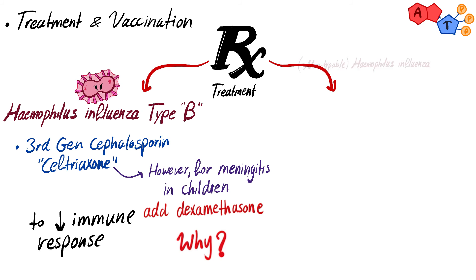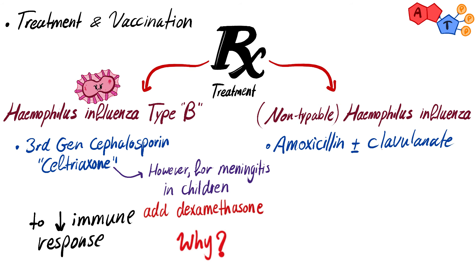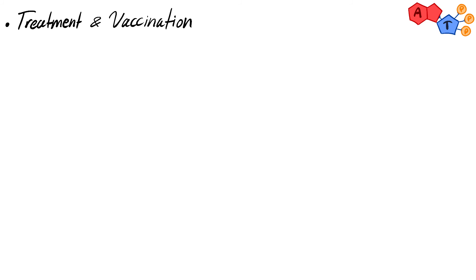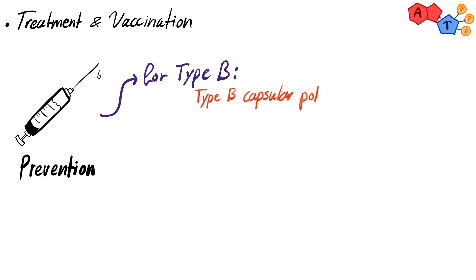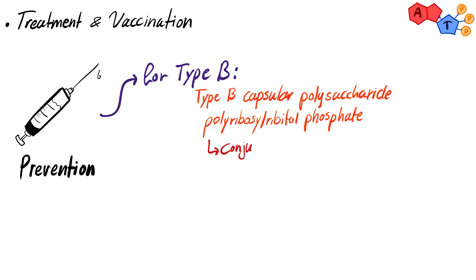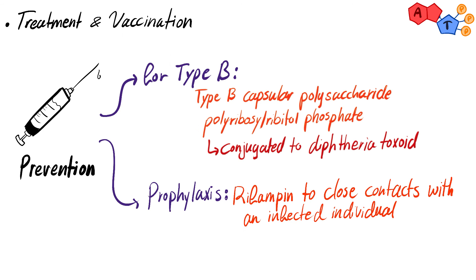For infections caused by non-typable strains, we use amoxicillin with or without clavulanate. To prevent infection with H. influenzae type B, we have a vaccine containing type B capsular polysaccharide polyribitol phosphate, conjugated to diphtheria toxoid. The vaccine is given to children from 2 to 18 months old. As prophylaxis, we give rifampin to close contacts of infected individuals to prevent infection.